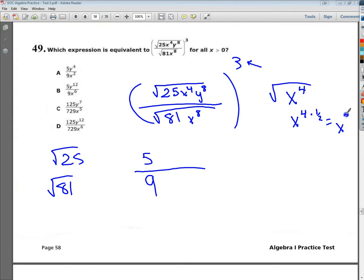So I've got 4 times 1 half, which is x to the 2nd power, because you have 1, 2, 3, 4, so two sets. So that's what's able to come out of that square root. So I end up with x to the 2nd power.